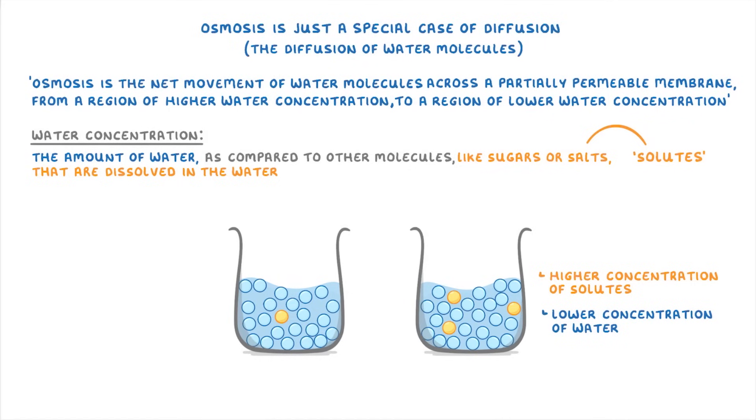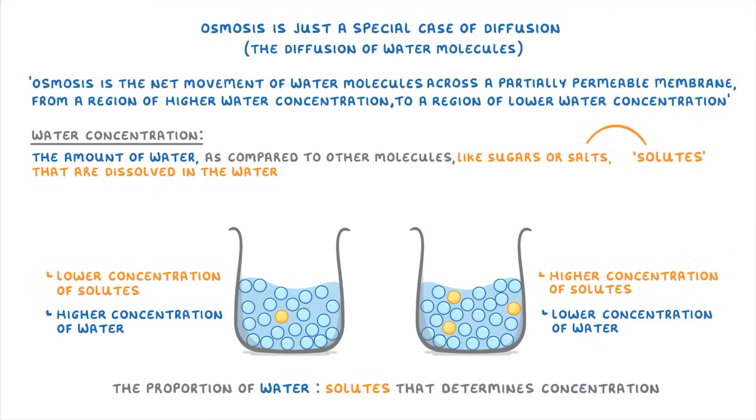Or if you're talking about the left beaker, you could say that it has a lower concentration of solutes, and a higher concentration of water. Either way though, the key point to understand here is that it's not the volume of water, but the proportion of water compared to solutes that determines the concentration. So our left beaker here has a higher water concentration.